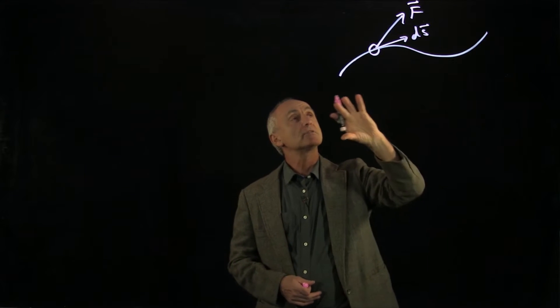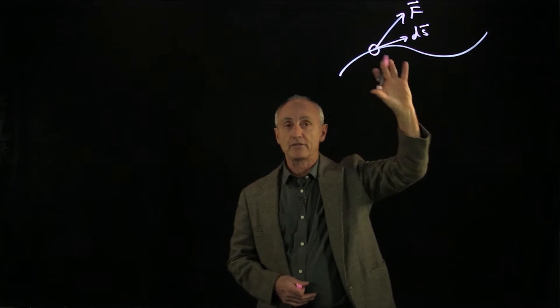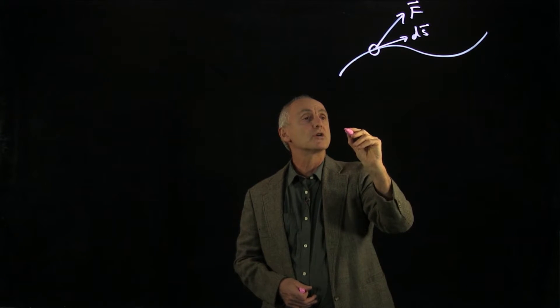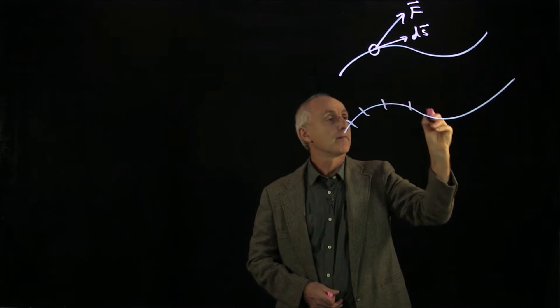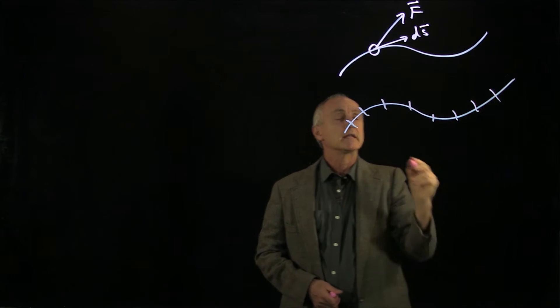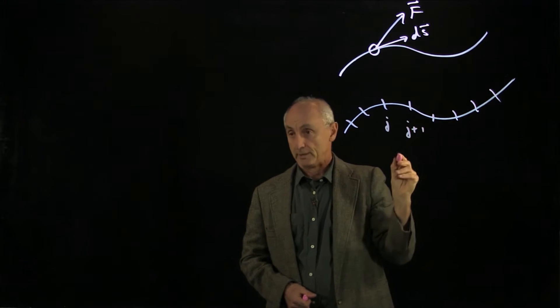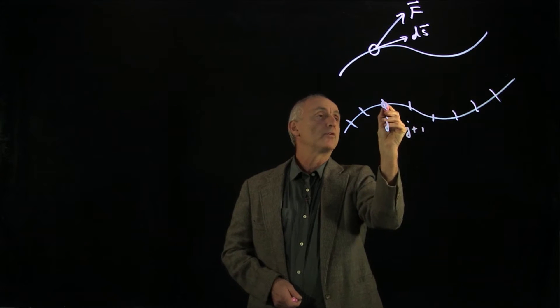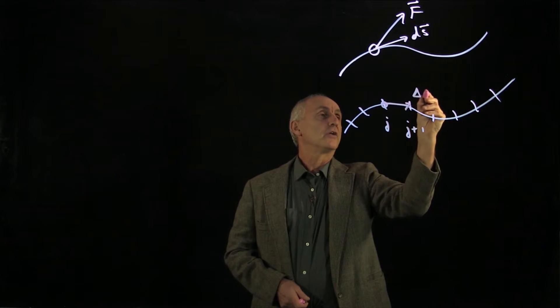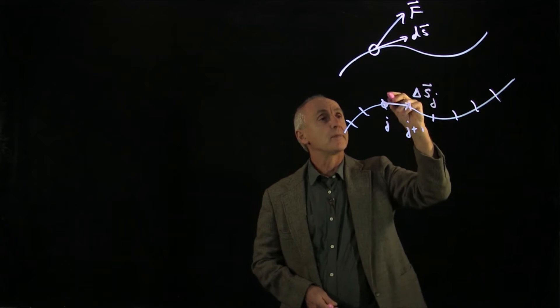What we're going to do is imagine that we're going to break the path down into a bunch of small intervals. And let's call this the j-th point and the j plus 1 point. Then our particle will start at j, and we'll displace it delta sj to the j plus 1 position on the path.